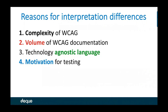The first cause is that web content accessibility guidelines and the field of accessibility are complex, and there's also a huge volume of WCAG documentation, making it difficult for any individual to fully understand. Second, WCAG 2.0 was published to be technology agnostic — not just based on HTML — which makes it last longer and have broader reach, but leads to more challenges of interpretation. Fourth, motivation for testing can change how you interpret something.